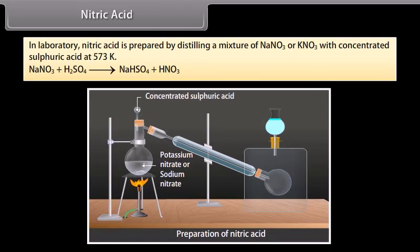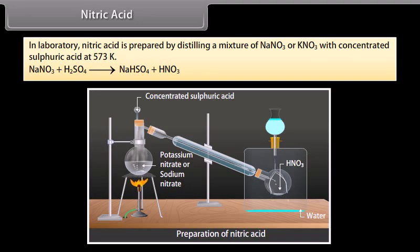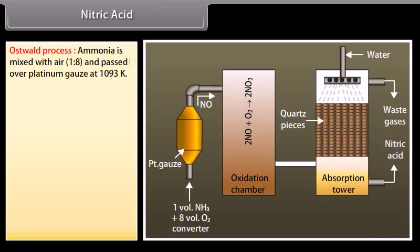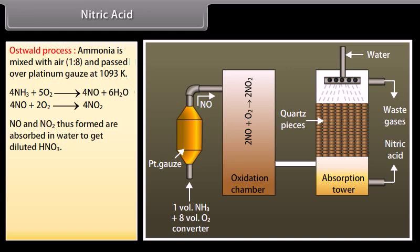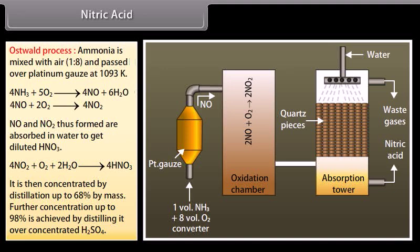In the laboratory, nitric acid is prepared by distilling NaNO3 or KNO3 with concentrated sulfuric acid at 573 Kelvin. On a large scale, it is manufactured by Ostwald's process: ammonia mixed with air in a 1:8 ratio is passed over platinum gauze at 1093 Kelvin. The NO and NO2 formed are absorbed in water to give dilute HNO3, then concentrated by distillation to 68% by mass. Further concentration to 98% is achieved by distilling over concentrated H2SO4.